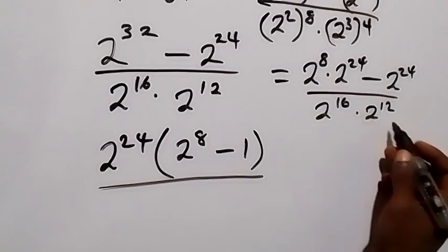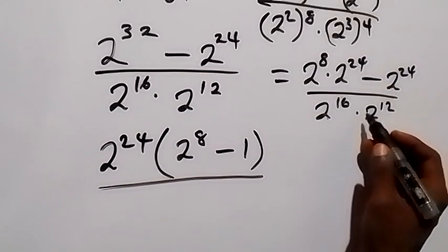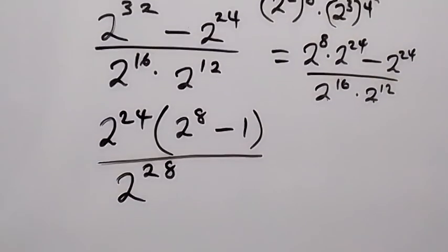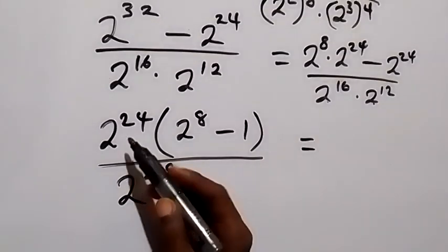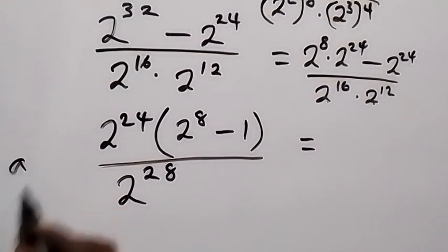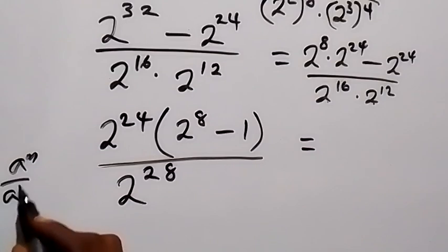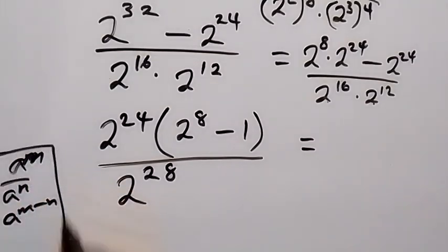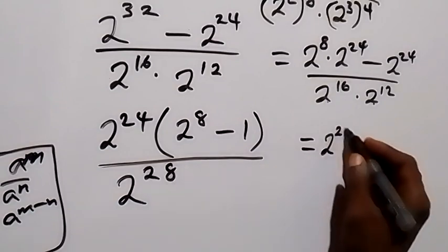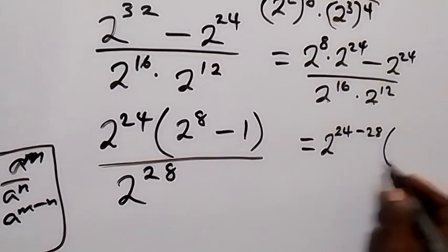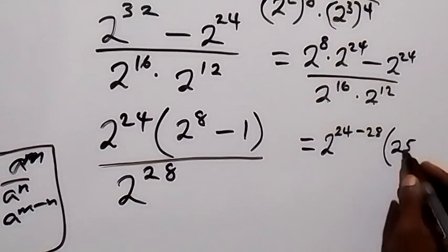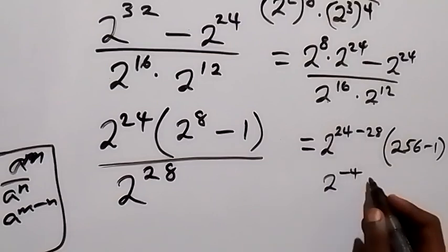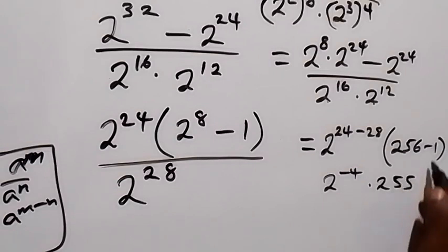We can add the powers in the denominator together, because when we multiply the same base we add the powers, so this becomes 2 raised to power 16 plus 12, that's 28. Then in the next step we can subtract this power from the numerator, from the law of indices: a raised to power m divided by a raised to power n gives a raised to power m minus n. So we can write this as 2 raised to power 24 minus 28, times the bracket 2 raised to power 8 minus 1.